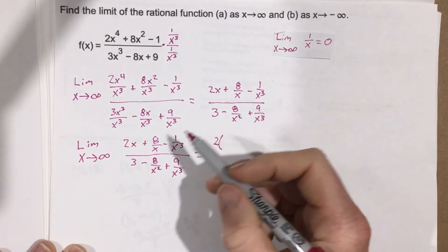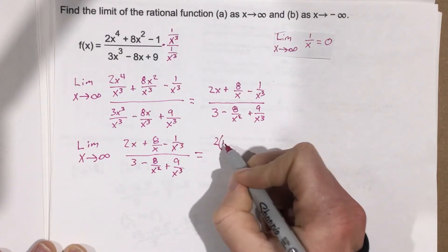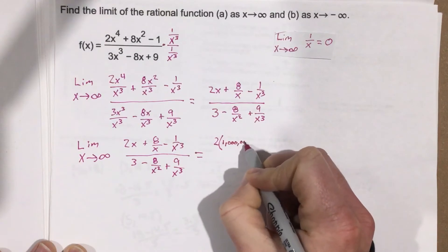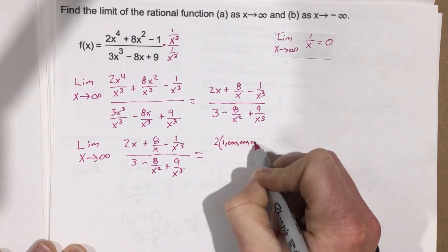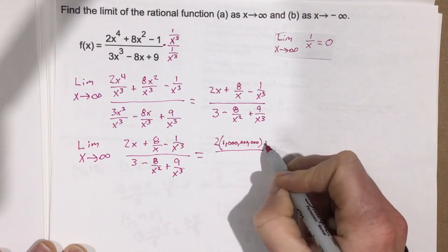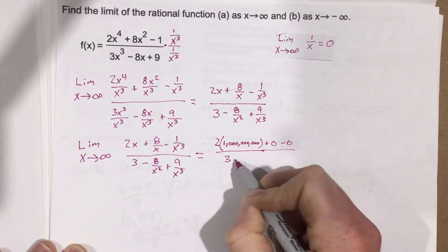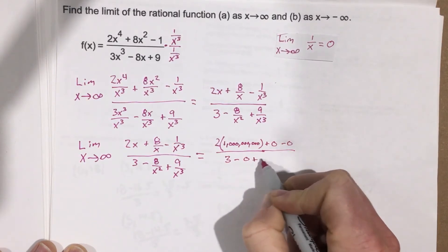Let's use a billion. This would be 2 times a billion plus 0 minus 0, over 3 minus 0 plus 0.